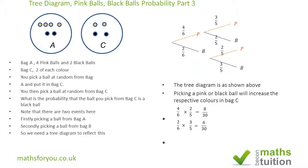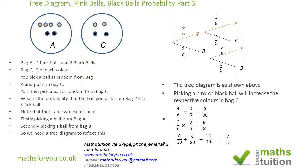You can either go down the route of 4 over 6 times 2 over 5, or 2 over 6 times 3 over 5. Because we have the word OR, we add them together: 8 over 30 plus 6 over 30 gives 14 over 30, which simplifies to 7 over 15. I hope that makes sense. Please subscribe and click on the adverts — see you soon, bye bye!